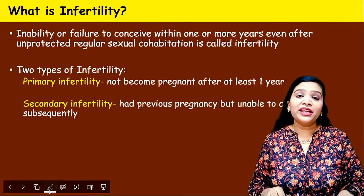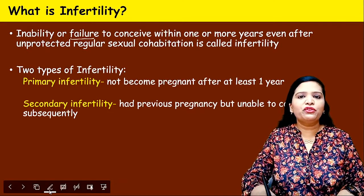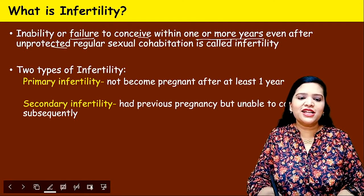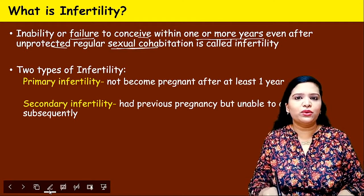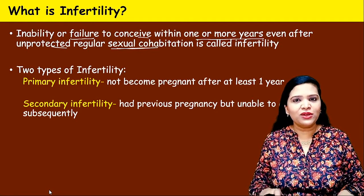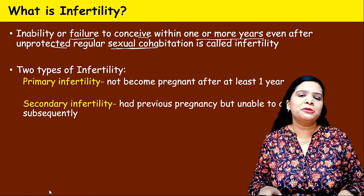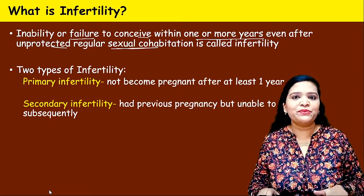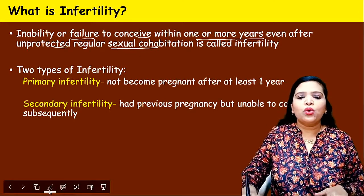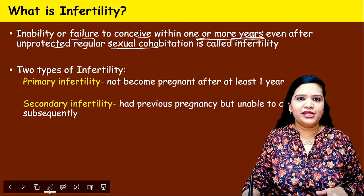What is the definition of infertility? Infertility is the inability or failure to conceive within one or more years, even after unprotected regular sexual intercourse. That means if a couple is married and having regular sexual intercourse without using any pregnancy preventive methods — not using condoms or anything — and the woman is still not getting pregnant within one year or more, this is called infertility.